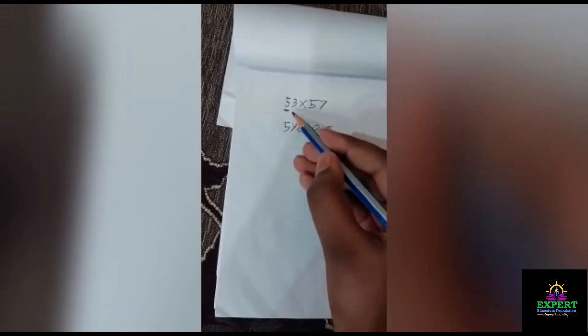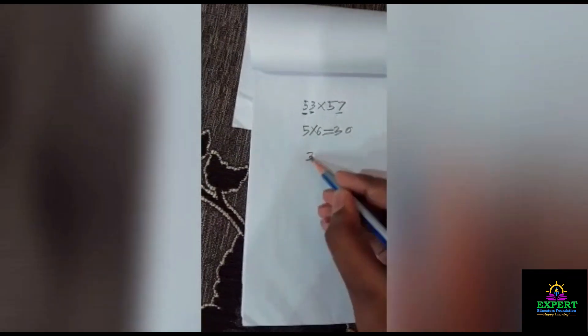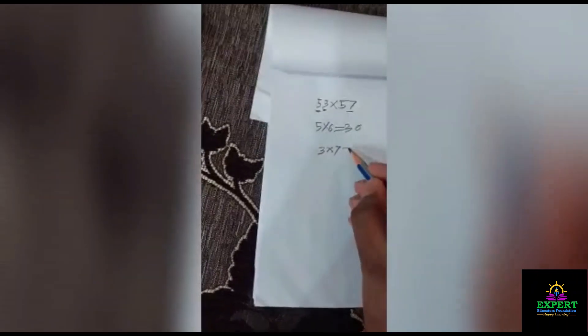And then we have to multiply this 3 with this 7. So, 3 multiplied by 7 equals 21.